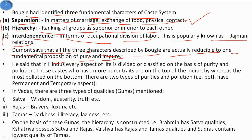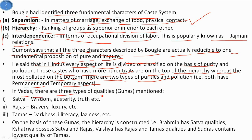Dumont says that all three characteristics described by Bouglé are actually reducible to one fundamental proposition: pure and impure — binary opposites. These three can be reduced to this one fundamental proposition. In Hinduism, every aspect of life is divided or classified on the basis of purity and pollution. Those castes with more pure traits are at the top of the hierarchy, whereas the most polluted are at the bottom. There are both permanent and temporary aspects of purity and pollution.